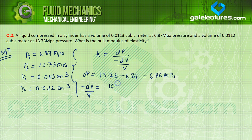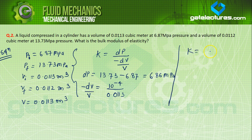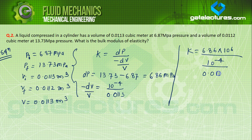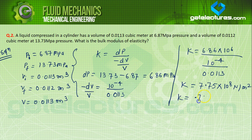So minus dV = 10⁻⁴, and V is the initial value 0.0113 m³. Then K = 6.86 MPa × 10⁶ divided by (10⁻⁴ / 0.0113). K is approximately equal to 7.75 × 10⁸ newton per meter square, or K = 0.775 GPa.